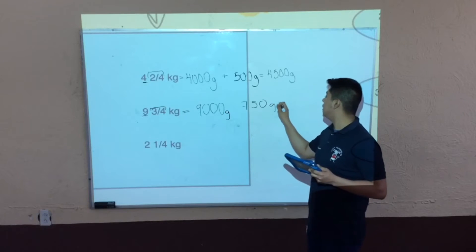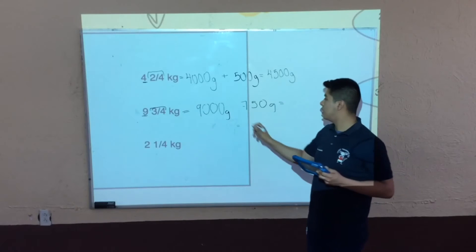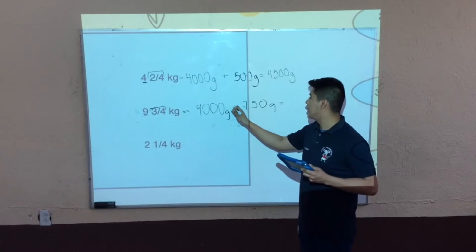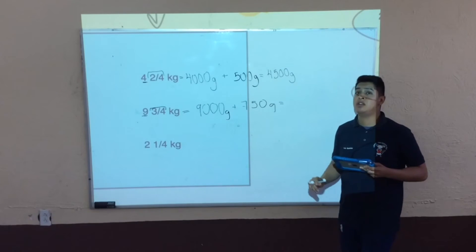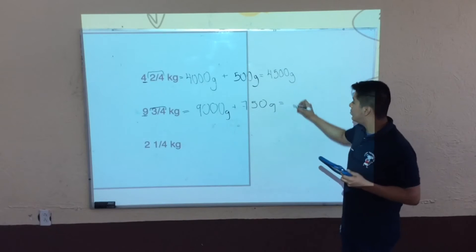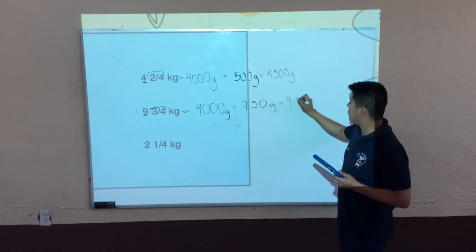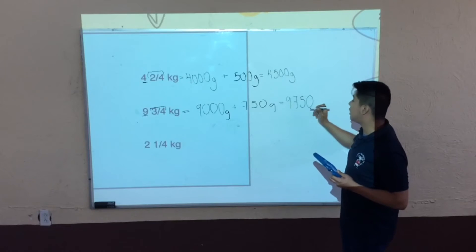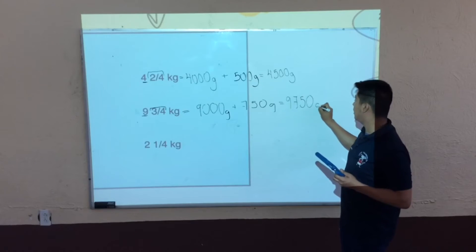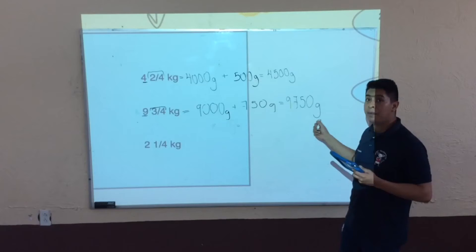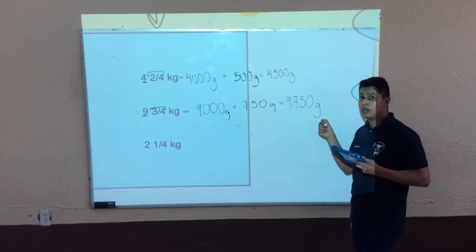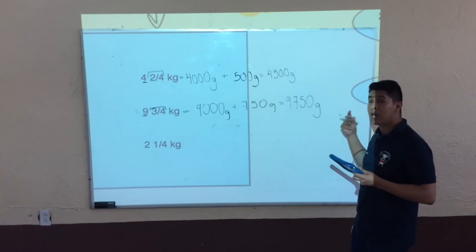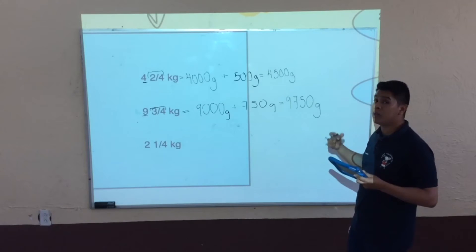Ahora sí realizamos la suma: 9000 más 750 sería 9750 gramos. Siempre es muy importante poner la unidad, si es gramos o es kilogramos.